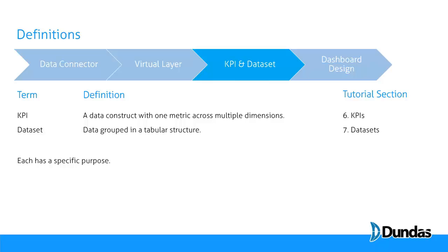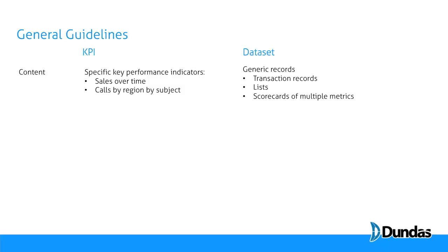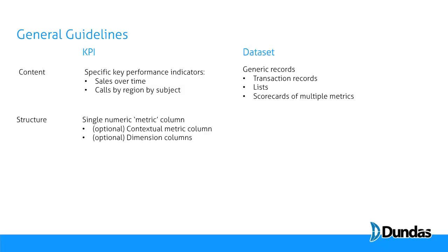Now each of these has a specific purpose within our platform. In terms of content, a KPI is a very specific key performance indicator — sales over time, or calls by region, by subject, as an example. Whereas a data set is just more generic data grouped together, so transaction records, or a list, or a scorecard composed of multiple metrics. So they differ in content, and this influences their structure.